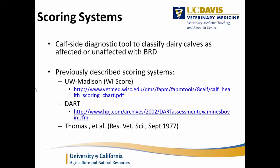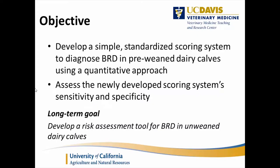Our objective was to develop a simple standardized scoring system to diagnose bovine respiratory disease in pre-weaned calves using a quantitative approach, and also to estimate its sensitivity and specificity — its diagnostic accuracy. The long-term goal was to incorporate this scoring system into a risk assessment tool that could be used on dairies or calf ranches to produce a customized set of recommendations for that specific facility on how to control or prevent BRD.